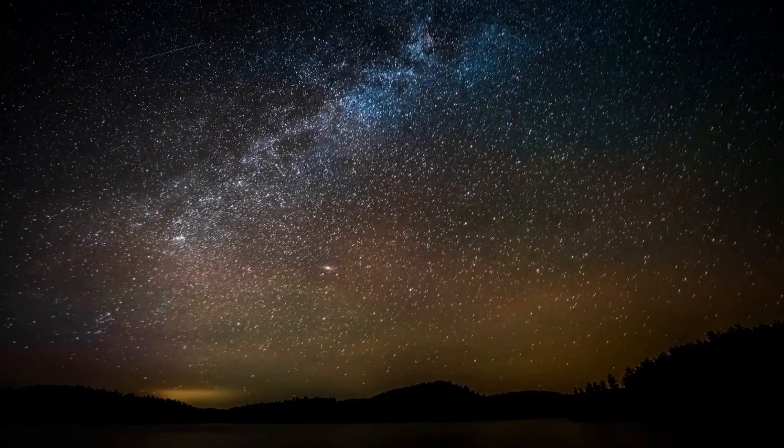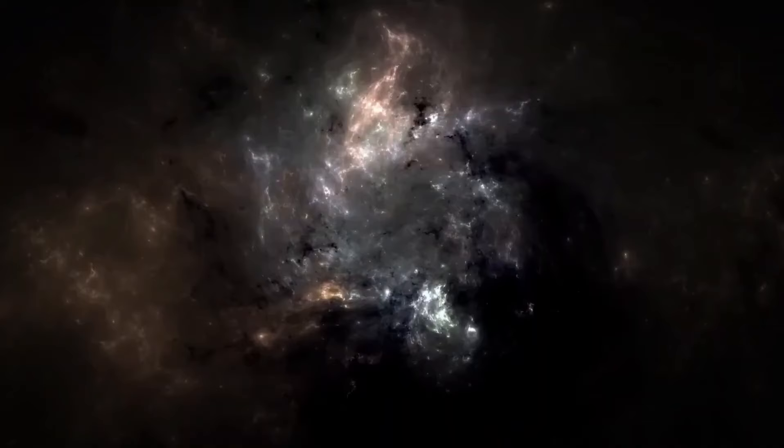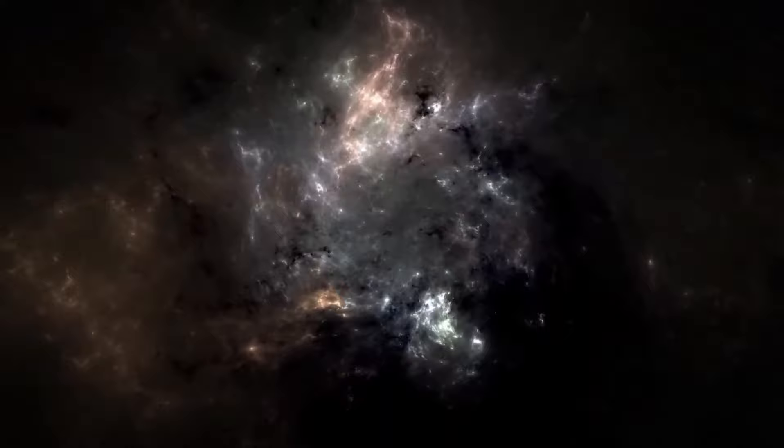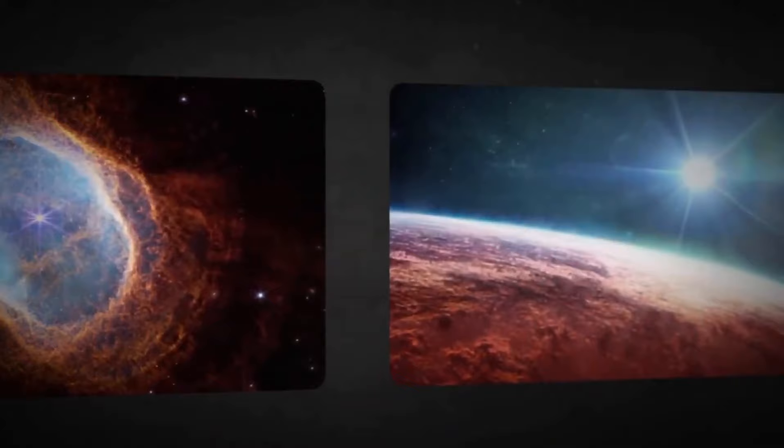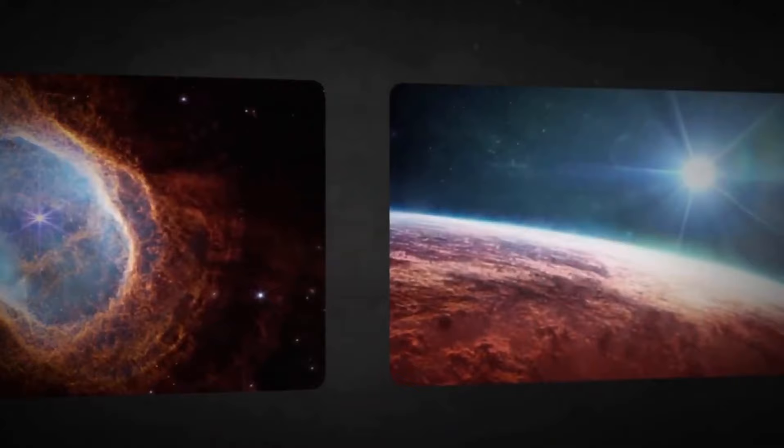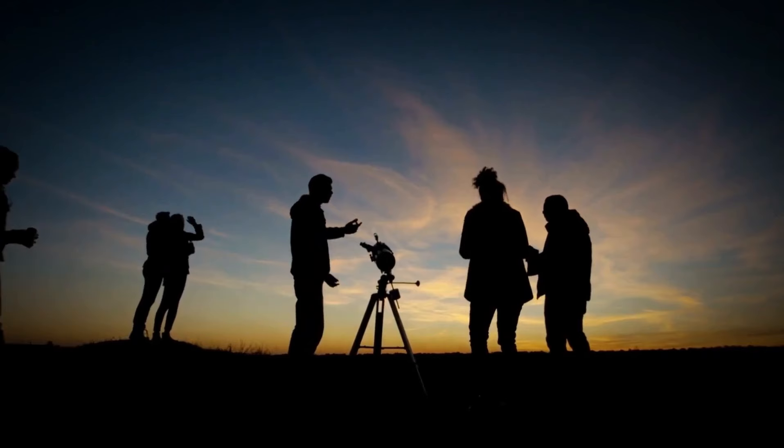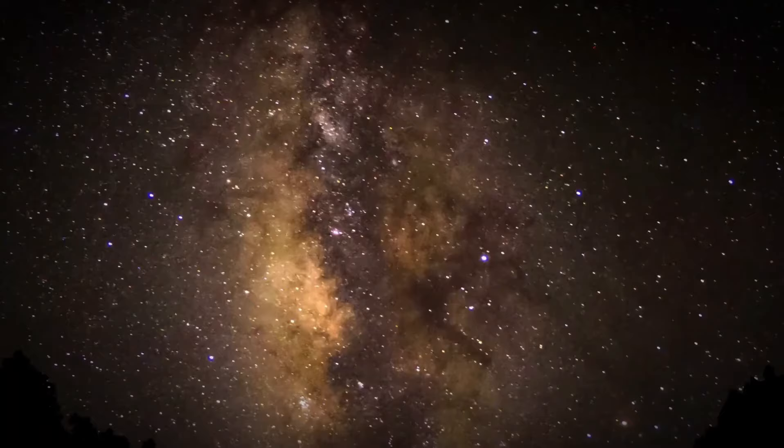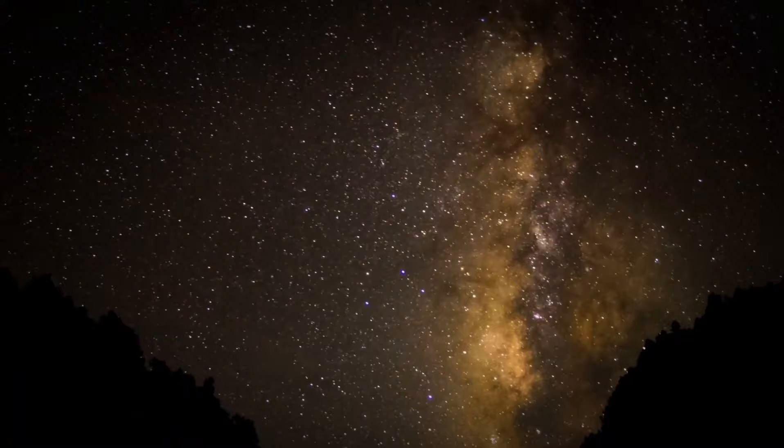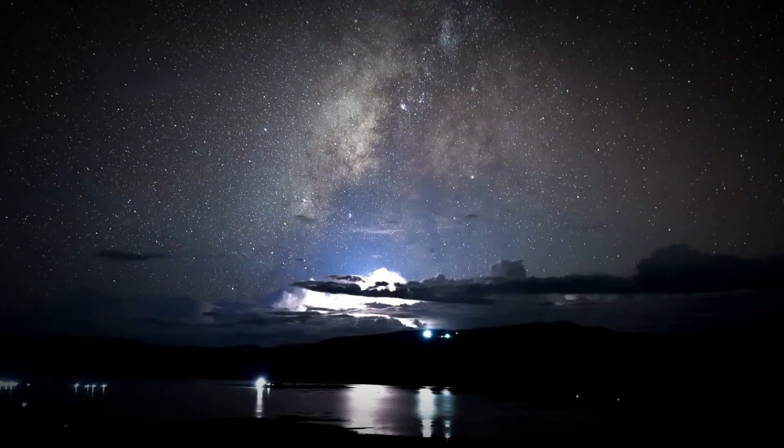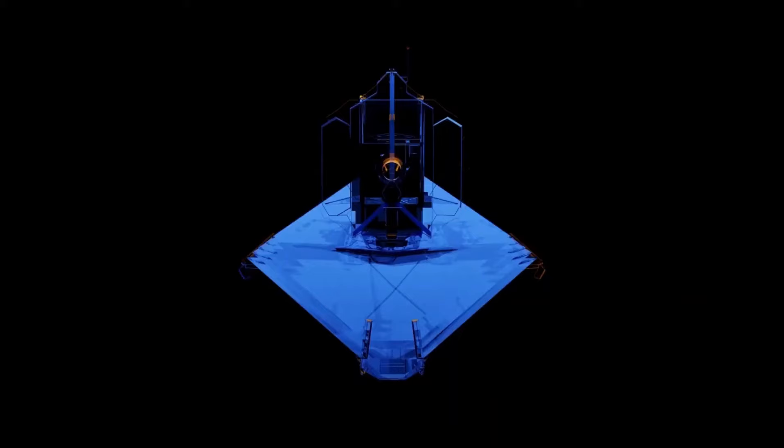Nestled within the vast expanse of space, Proxima Centauri b orbits its host star, Proxima Centauri, a red dwarf located approximately 4.2 light-years away from Earth. The discovery of Proxima b has sparked intense scientific interest and captured the imagination of people worldwide, as it raises the tantalizing possibility of finding life beyond our own solar system. Proxima Centauri exists within the habitable zone of its star, a region where conditions may be conducive to the existence of liquid water, a critical ingredient for life as we know it. Its proximity to Earth combined with its potential habitability has led scientists to speculate about the possibility of Proxima b harboring alien life forms.